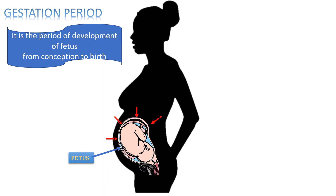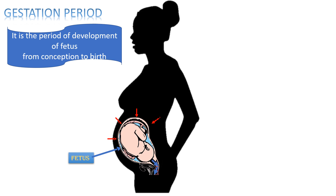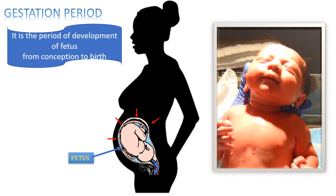As fetal development is completed, the walls of the uterus start contracting and the cervix opens. Because of the muscular contraction of the uterus, the fetus is pushed out through the vagina. As the fetus comes out from the vagina, it is now called a baby, and a new life is born.